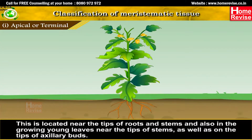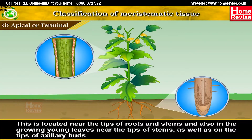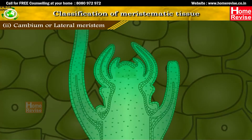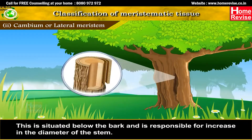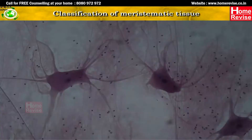Apical meristem is located near the tips of roots and stems, in the growing young leaves near the tips of stems, as well as on the tips of axillary buds. Cambium or lateral meristem is situated below the bark and is responsible for increase in the diameter of the stem.